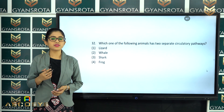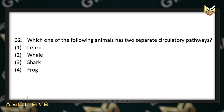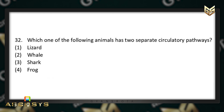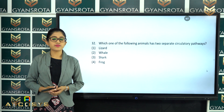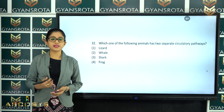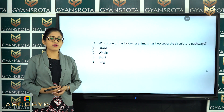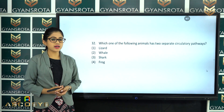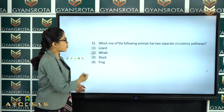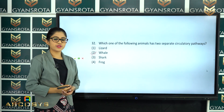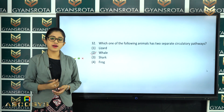The next question is question number 32. Which one of the following animals has two separate circulatory pathways? Lizard, whale, shark, or frog? This is from the chapter Animal Kingdom. Among them, the one with two separate circulatory pathways is option number 2 — that is whale. Whale has two circulatory pathways.